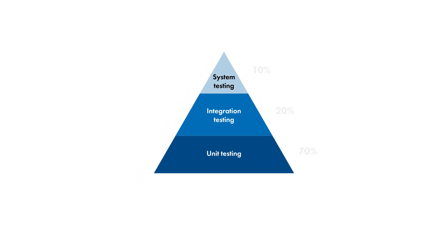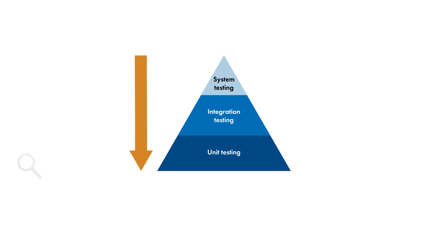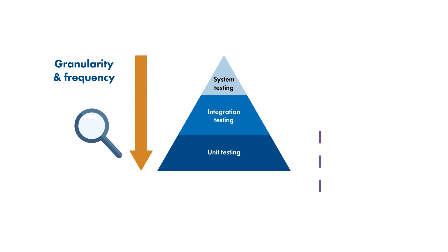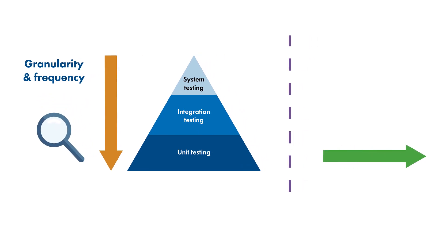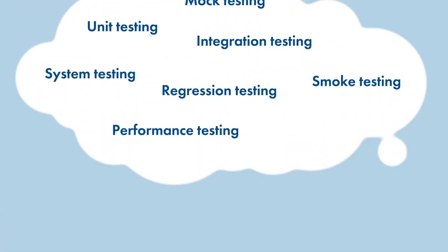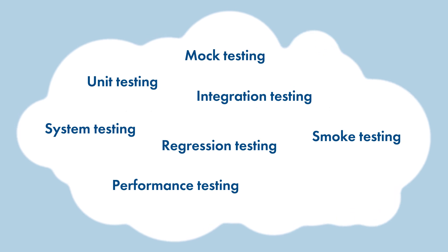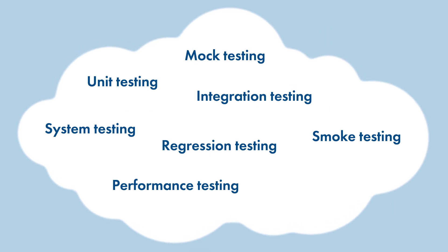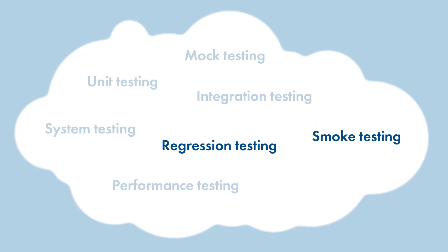The pyramid represents just one dimension to software testing. In addition to the granularity and frequency of testing, there is another orthogonal dimension, which is what is the goal of that particular test. Functional tests focus on the correct answers and behaviors of the software, and there are many types of functional tests. The fourth and fifth types we'll cover are the two most common functional tests: smoke testing and regression testing.